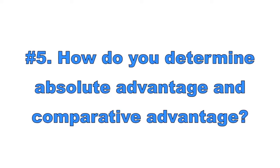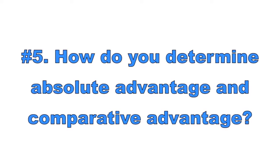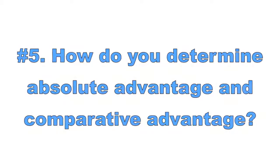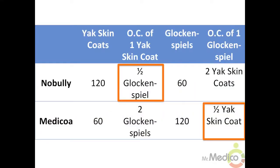Number five: How do you determine absolute advantage and comparative advantage? To determine which country or economy has the absolute advantage in the production of a good, you simply look to see which country can produce more. If Nobully can produce 120 yak skin coats and Medicoa can only produce 60 yak skin coats, then Nobully has the absolute advantage in yak skin coats. You can also determine absolute advantage by seeing which country can produce one unit faster or with the least amount of economic resources.